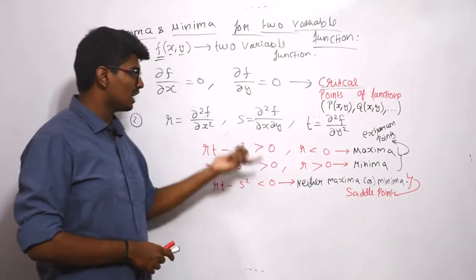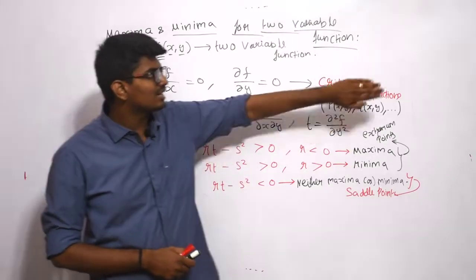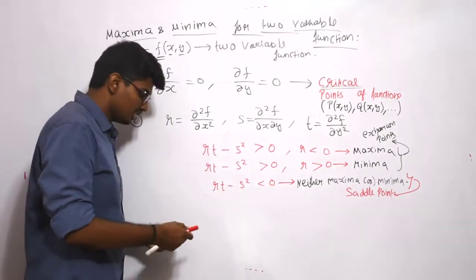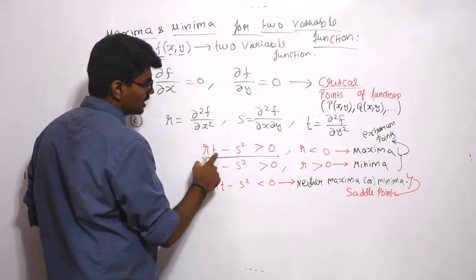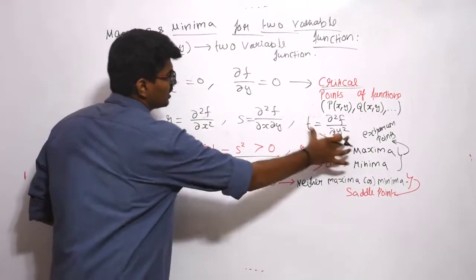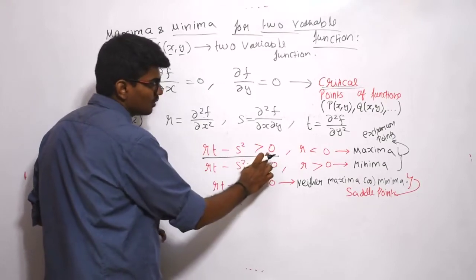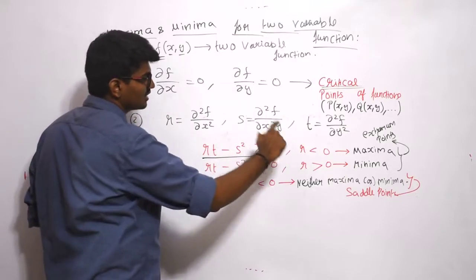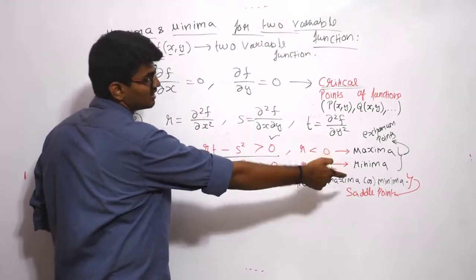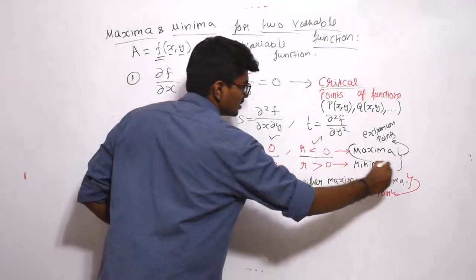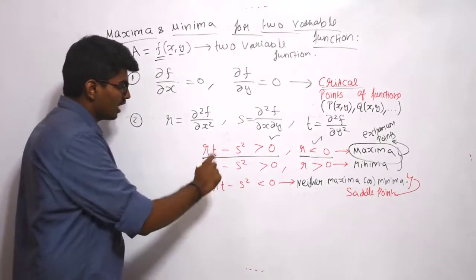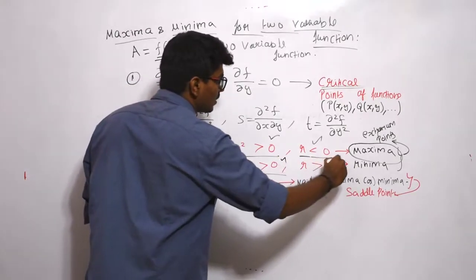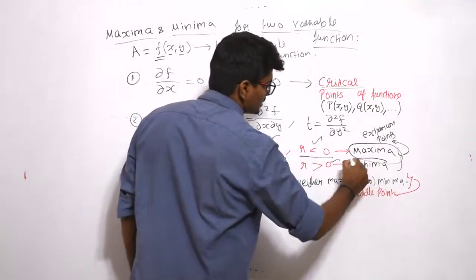Once after determining critical points, we check whether it is maxima or minima by evaluating rt minus s². If rt minus s² is greater than 0 and r is less than 0, it corresponds to maxima. If rt minus s² is greater than 0 and r is also greater than 0, then the points are minima.